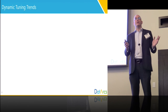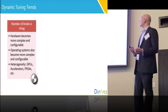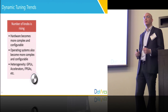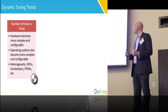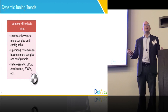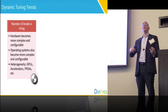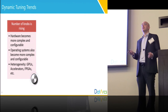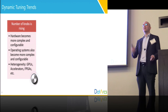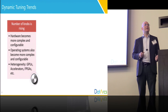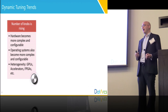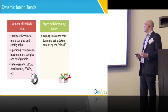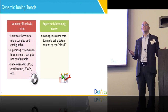Before we conclude, I want to talk about the trends we see behind dynamic tuning. First, the number of knobs is poised to increase because hardware becomes more complex and configurable. With every new release of the kernel, we see more and more knobs you can tune. We also start to see a lot of heterogeneity in the data center — GPUs, accelerators, FPGAs — which brings even more knobs.